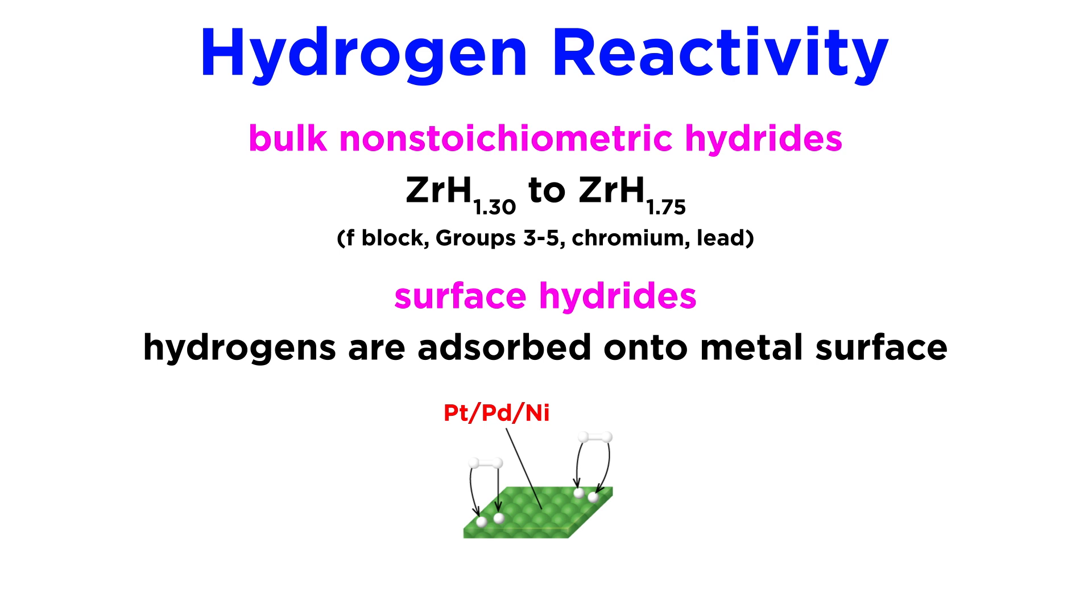Then there are surface hydrides, most commonly seen with group X metals like platinum, palladium, and nickel. Here, the hydrogen atoms are adsorbed onto the surface of the metal, activating them for further reaction with organic compounds. This type of chemistry is the basis for much of the catalysis we will discuss later in the series.